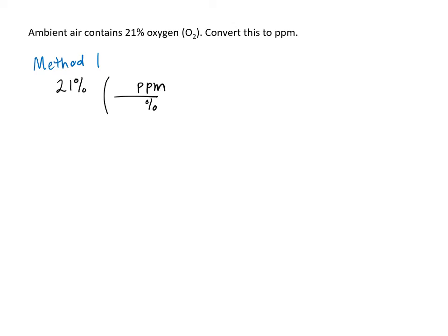I know that we're looking at 10 to the minus 2 to 10 to the minus 6, so that's a factor of 10 to the 4 different. 10 to the 4 ppm is equal to 1%, so it's like I'm multiplying by 1 here. And this is 210,000 ppm.